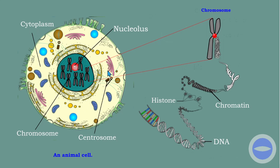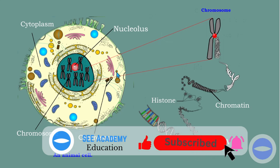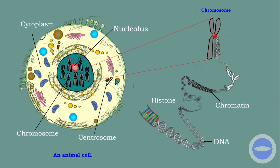Another thing is the centrosome. A cell contains two centrosomes, one on each side of the cell. I will talk about them later in this video when I explain mitosis, because mitosis is part of this video.